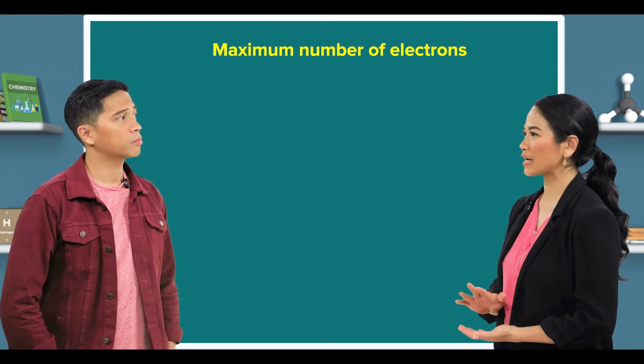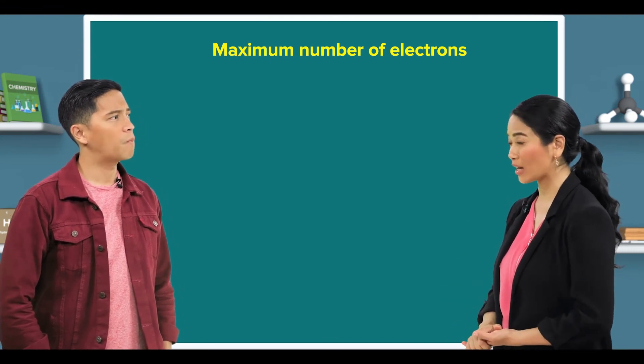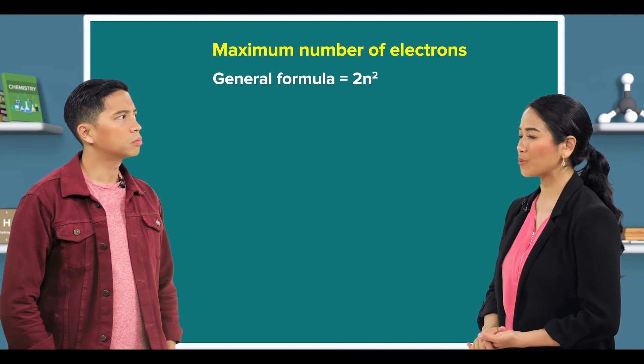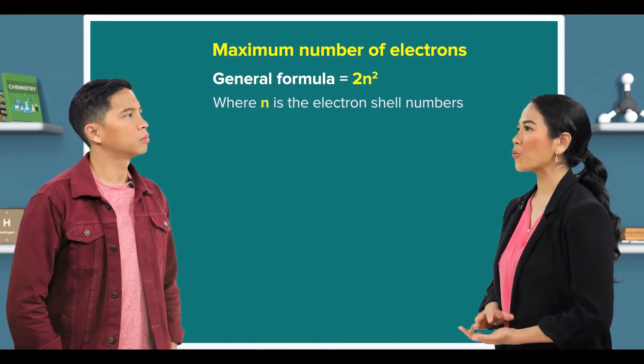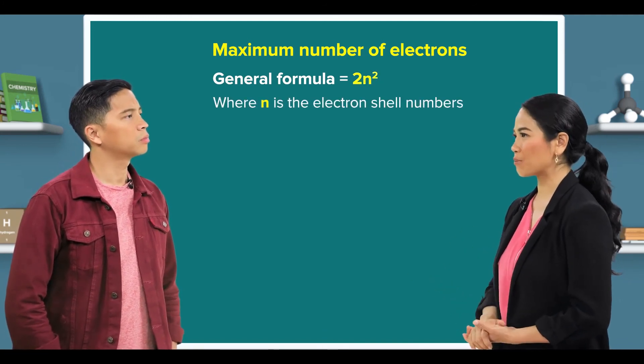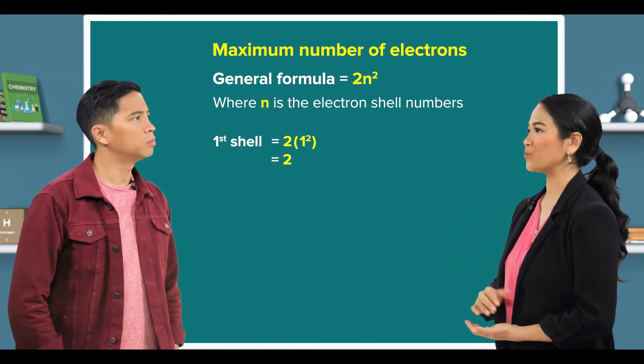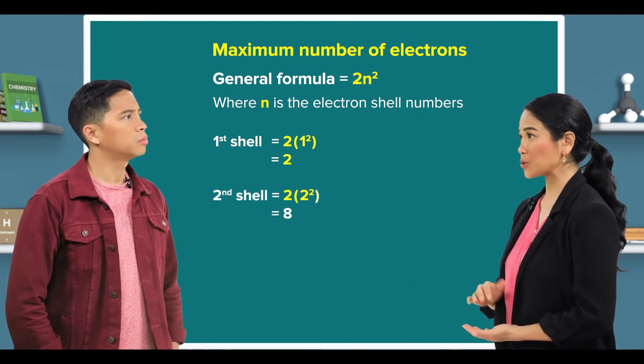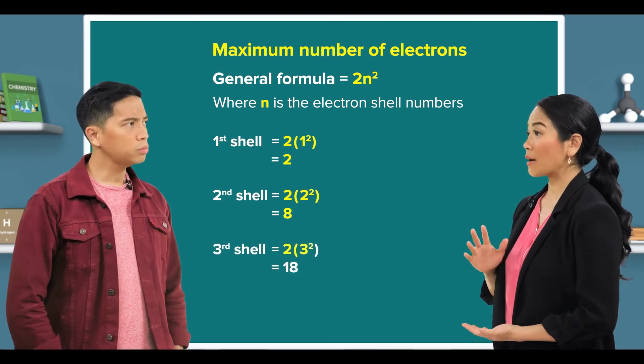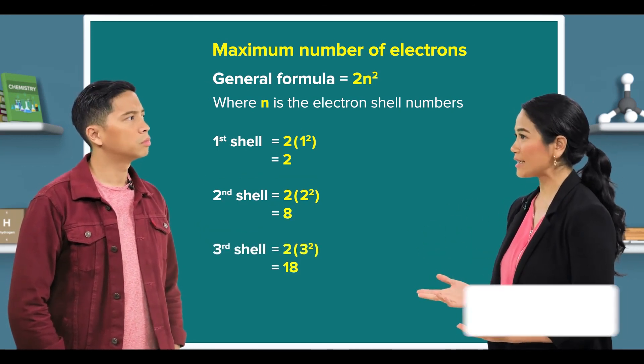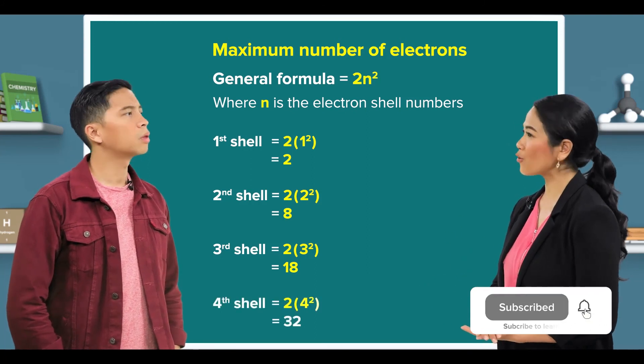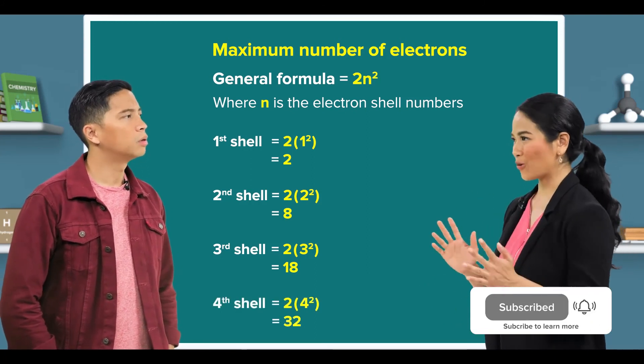In fact, to know what the maximum number of electrons in any electron shell is, simply use the formula 2n squared, where n is the electron shell numbers. So 2 times 1 squared equals 2, and 2 times 2 squared equals 8, 2 times 3 squared equals 18, and 2 times 4 squared equals 32.